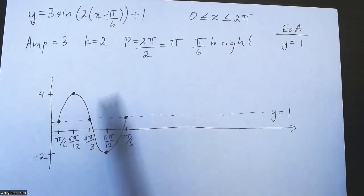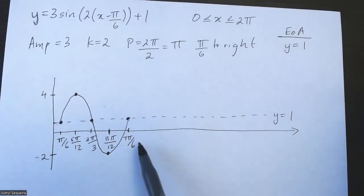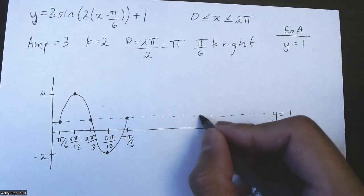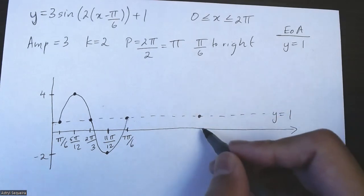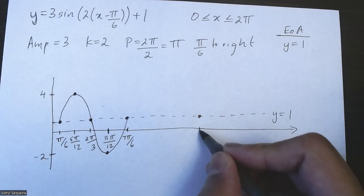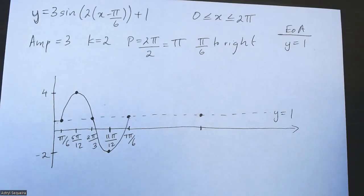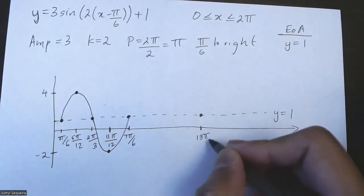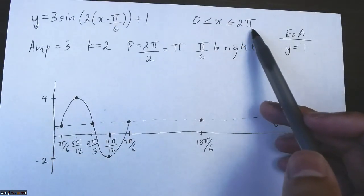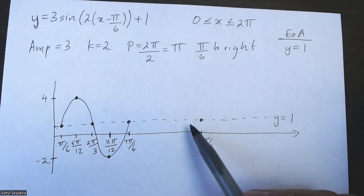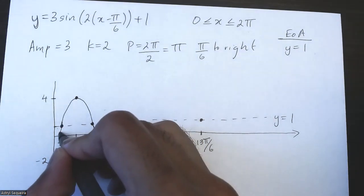Now that we've completed the first cycle, we need to continue to two pi because seven pi over six is far less than two pi. So I'm going to add another period. I'll find the x value of the next axis crossing: seven pi over six plus pi equals thirteen pi over six. Since thirteen pi over six is larger than two pi, the graph will not reach that point — it will end before it. On this side, I can extend the graph to hit the axis.